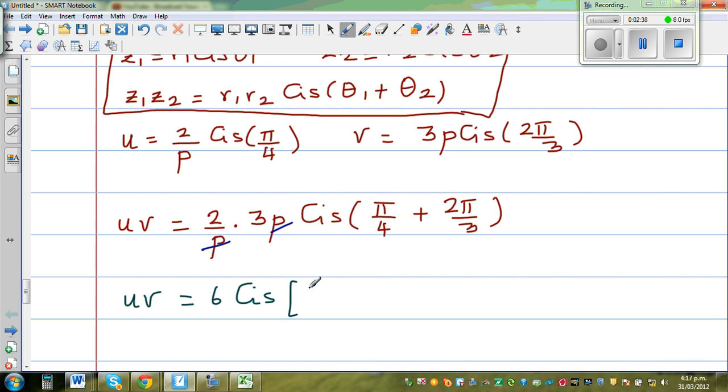How to make the denominators 12? I have to multiply by 3, so this is 3π/12, multiplying both the numerator and denominator by 3. And if you want to make this denominator 12, I have to multiply by 4, which is 8π/12.